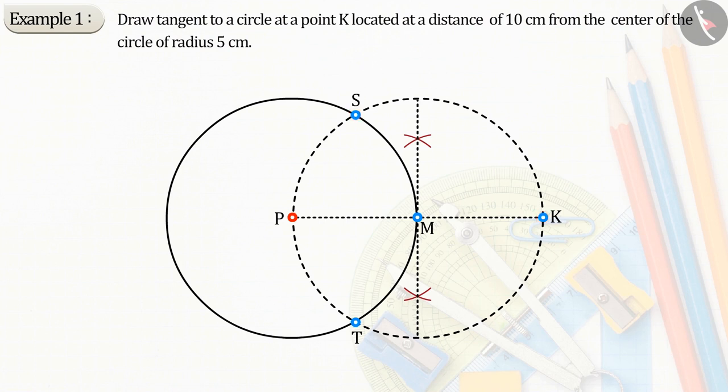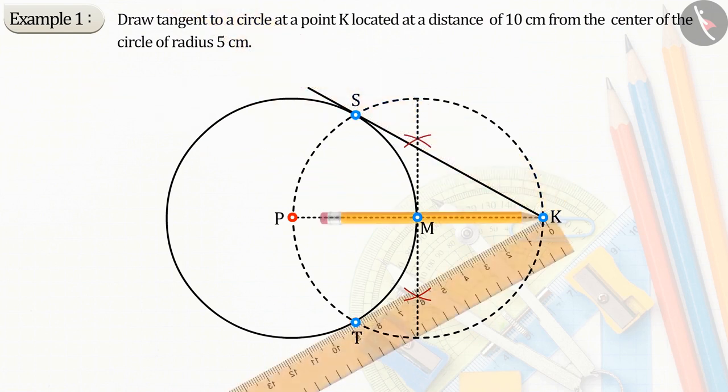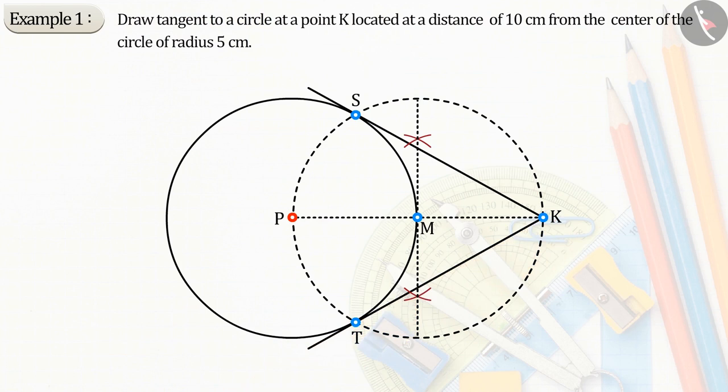From point K, draw lines through point S and T. The tangents are KS and KT. The KS and KT are two tangents that we had to create.